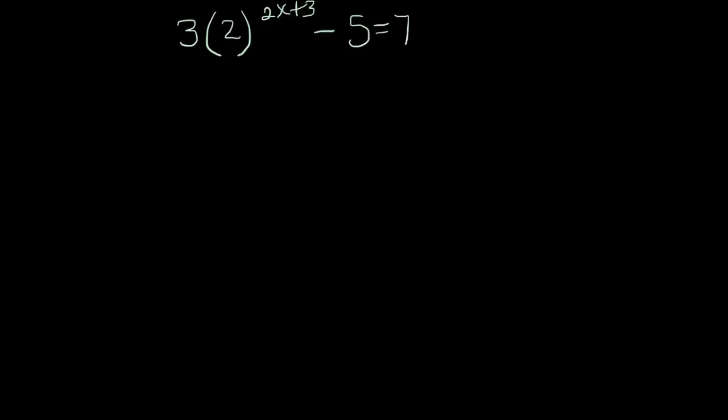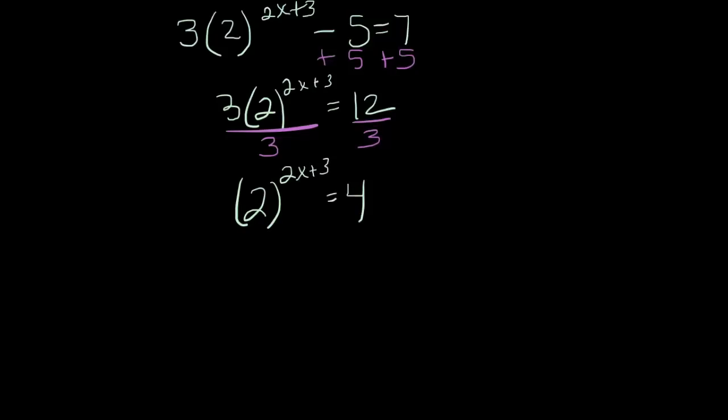I'm going to perform all of the inverse order operations just as I would in a normal equation to solve for this exponent. So first, I would add 5 to both sides. Next, I would divide by 3. And here's where our new step comes into play. So how do you solve for this exponent here? Right here.